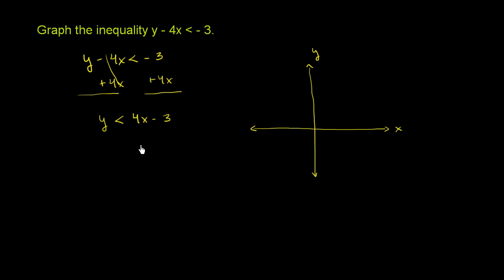And we want to be careful because this says y is less than 4x minus 3. Not less than or equal to 4x minus 3, or not y is equal to 4x minus 3. So what we want to do is create a boundary at y is equal to 4x minus 3.